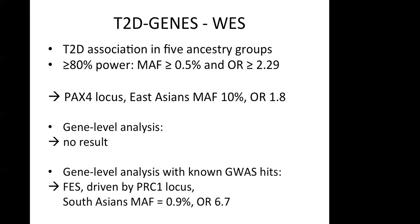Again, not much was found at the genome-wide significance level. Gene-level analysis also yielded no result. When they did a gene-level analysis restricted to known GWAS hit genes, they found one gene — FES — driven by the PRC1 locus in South Asians.